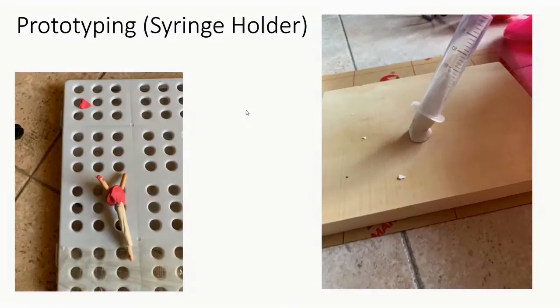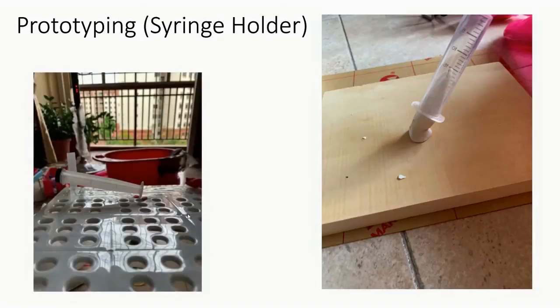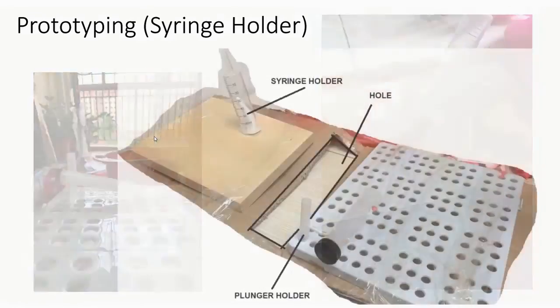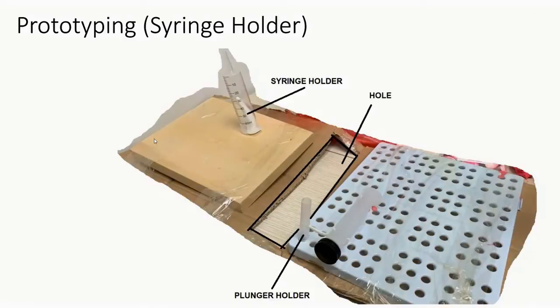For prototyping of the syringe holder, the syringe holder first uses clay, whereas the holder for the plunger uses two chopsticks and plasticine. The downside to this is that it is too big to hold the plunger and it breaks off too easily, which leads to prototype two, which utilizes a toothpick.